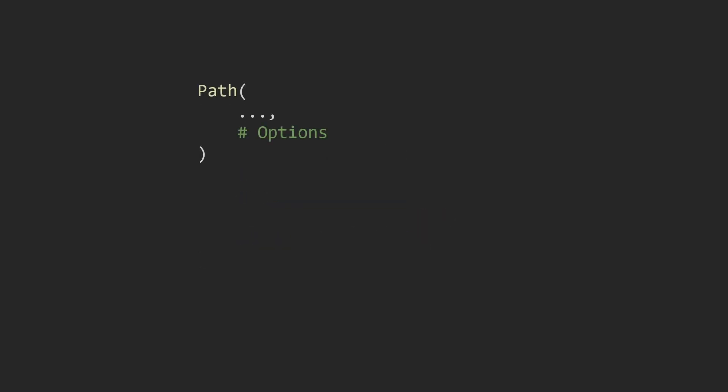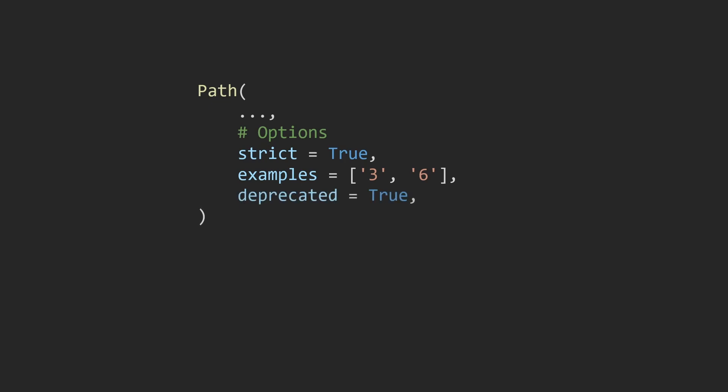Next we'll look at some other options we can pass into the path parameter. We can specify strict validations by setting strict equal to true. We can also add examples so they appear when viewing the endpoint on ReDoc. We can also mark a path parameter as deprecated, meaning it may not be optimal or could be removed in the future. There are a few other options we won't cover in this video.